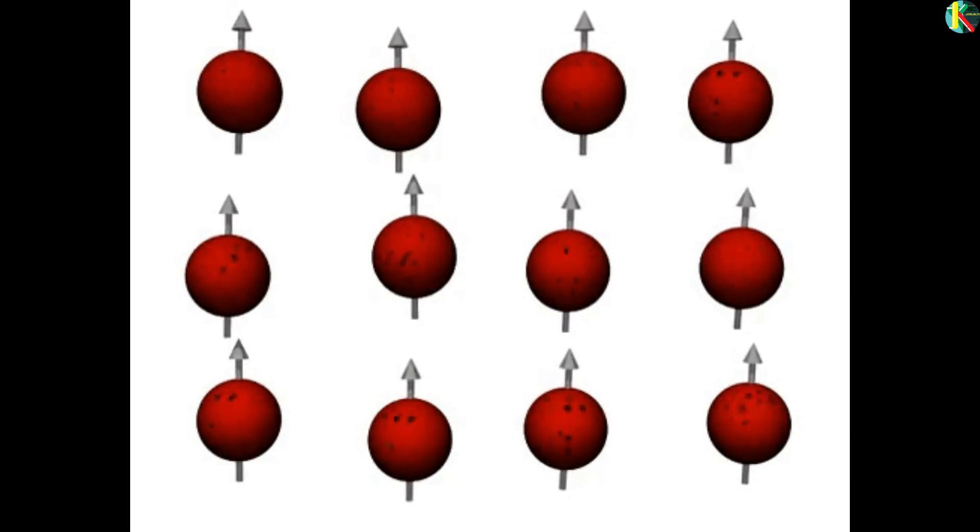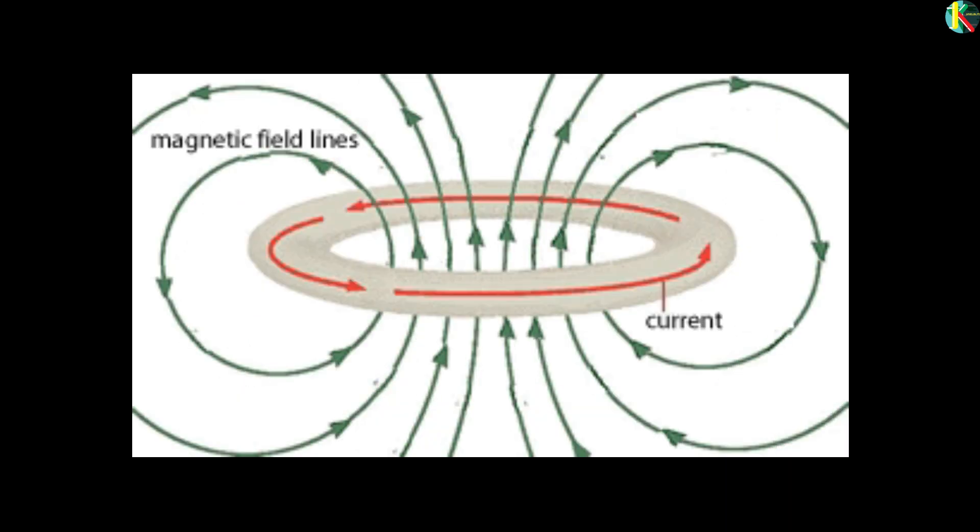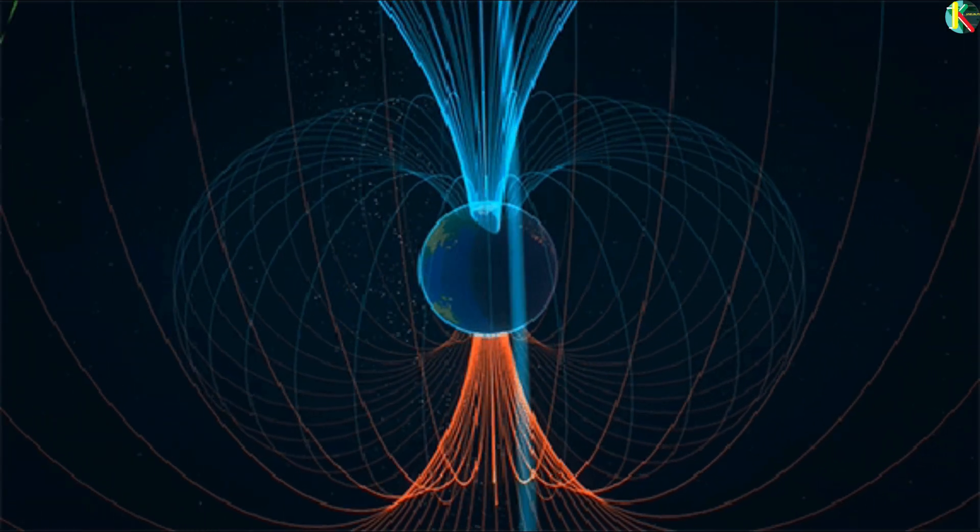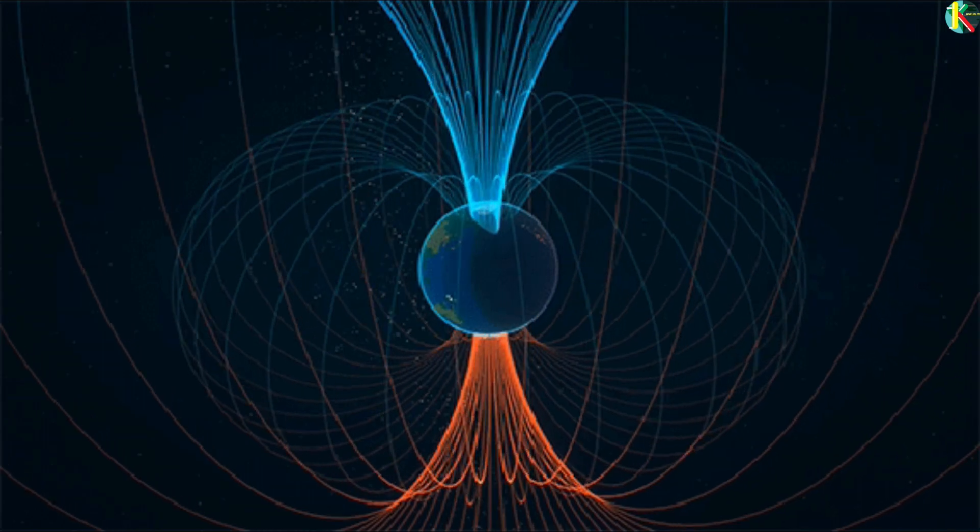The particles with quantum spin do generate a magnetic field, which is same as an electric charge moving around a looped wire or the electrical currents in Earth's spinning core.